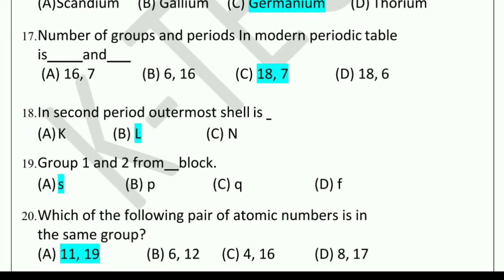Next question: Number of groups and periods in the modern periodic table is dash and dash. Option A: 16, 7. Option B: 6, 16. Option C: 18, 7. Option D: 18, 6. The correct option is 18 groups and 7 periods.